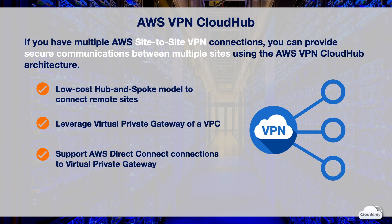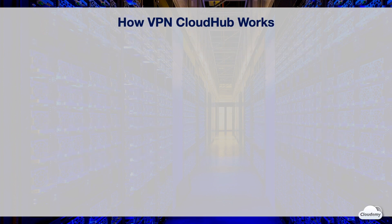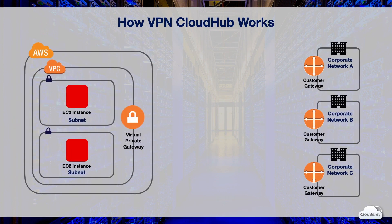For instance, your corporate headquarters can have a Direct Connect connection to a VPC, and the branch offices use VPN to connect to the same VPC. Branch offices can send and receive data with each other and with the headquarters through the CloudHub over the private network. Here is how AWS VPN CloudHub works.